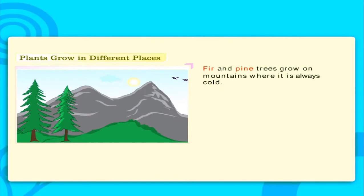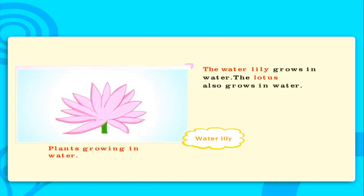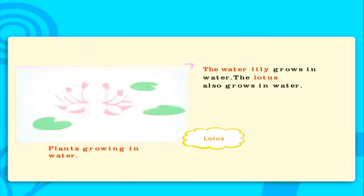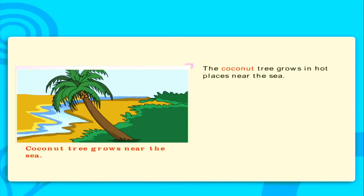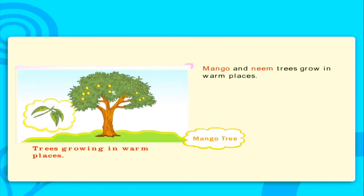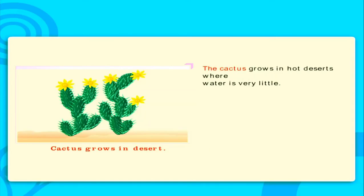Fir and pine trees grow on mountains where it is always cold. The water lily plant grows in water. The lotus plant also grows in water. The coconut tree grows in hot places near the sea. The cactus plant grows in hot deserts where water is very little.